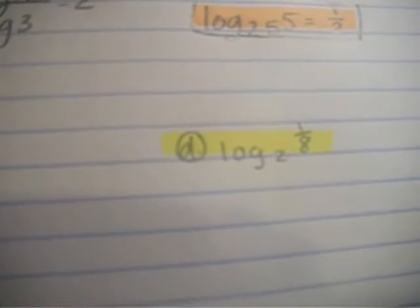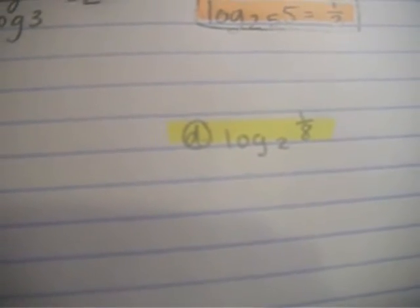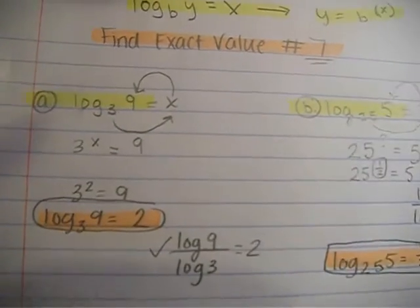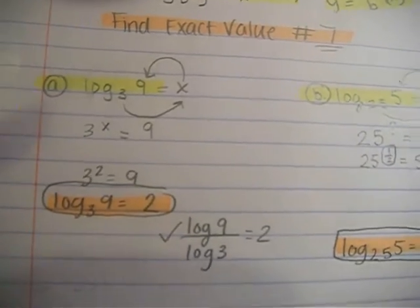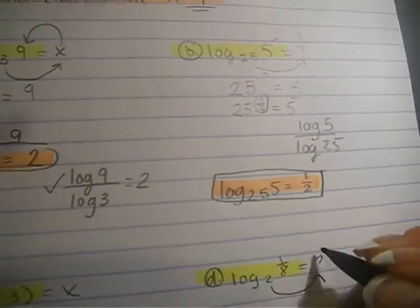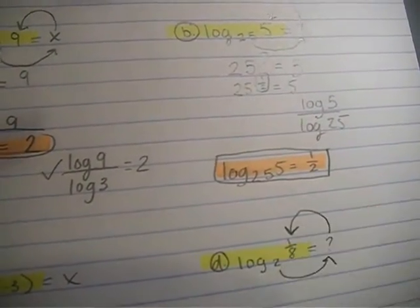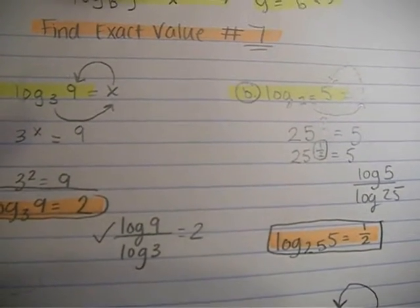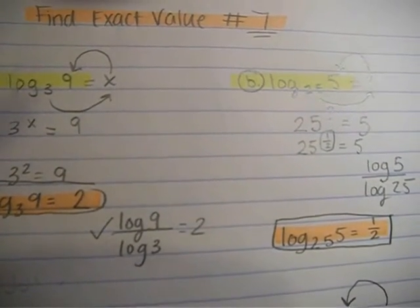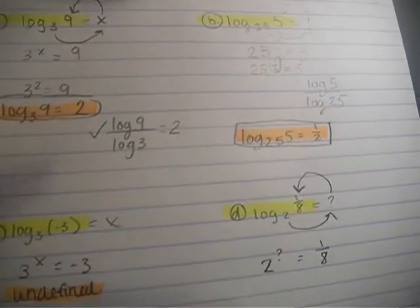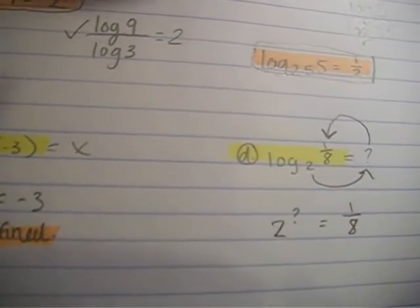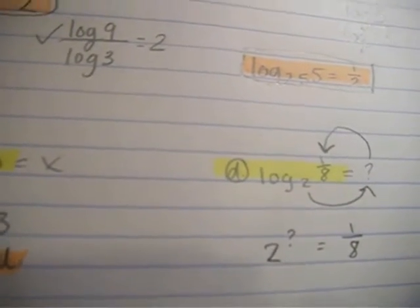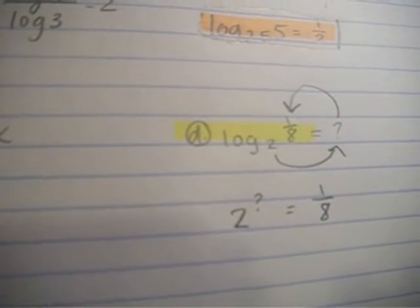Now for the last problem, we have log base 2 of 1 eighth. So 2 to what will get you 1 eighth? Remember I talked about fractions? If you have exponents and you get a fraction, you know that your exponent must be raised to a negative number.